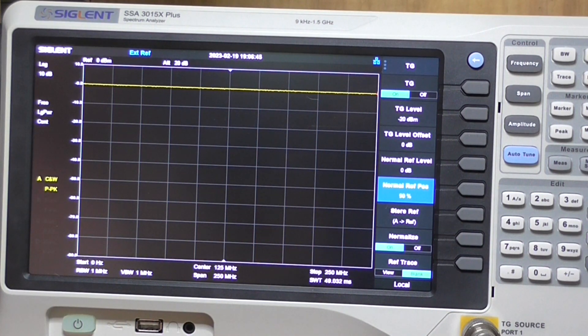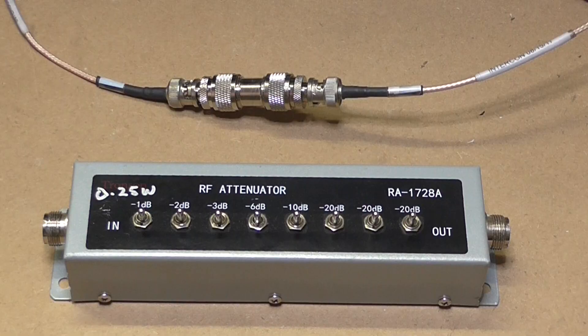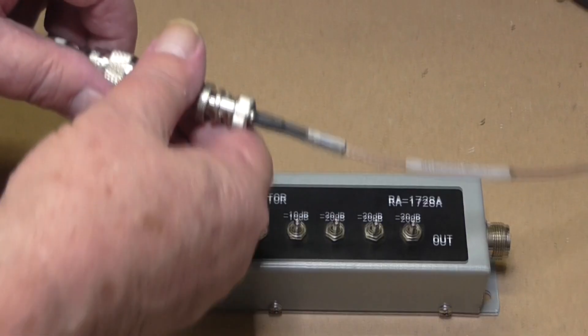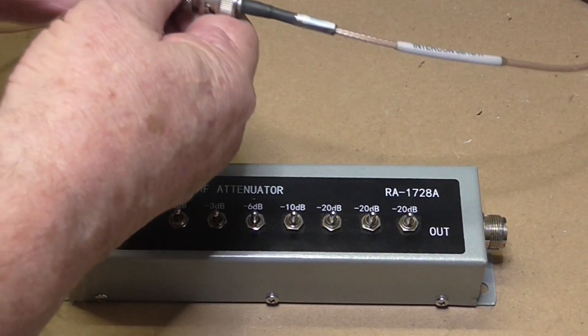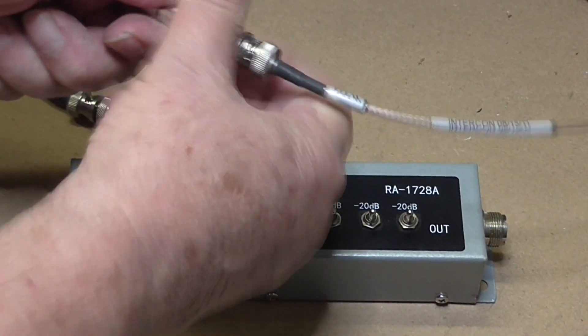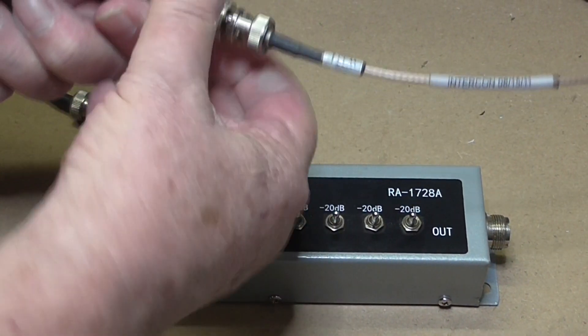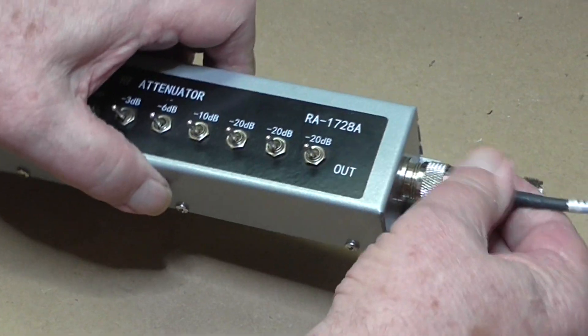Let's connect the attenuator into the circuit. We'll disconnect the short and connect the attenuator.